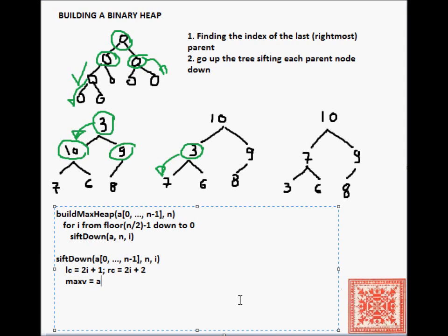What do we do? We compute the indices of the left child and the right child, 2i plus 1, and rc is 2i plus 2. i is the index of that node. Then, the maximum value, the value of the maximum child, is going to be set to the value of the current node, and maxi is the value of the maximum node of the three, the parent, the left child, and the right child.